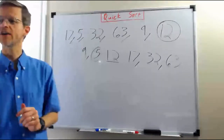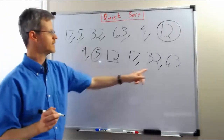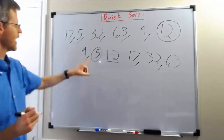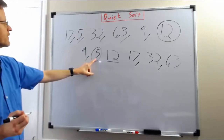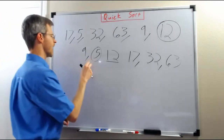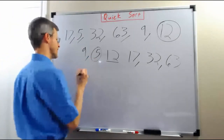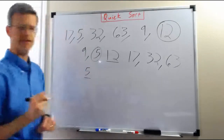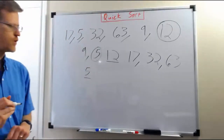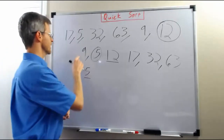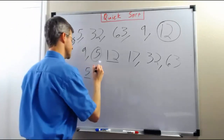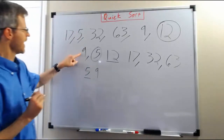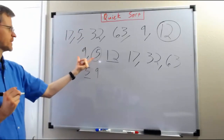Quicksort recurs on the lists that are formed on either side of the pivot. So we're going to pick 5 as our pivot element out of this list, write that down here and underline it, showing that it was the pivot before. Then we're going to write 9 to the right of it because it's greater than 5, and those were the only two numbers from that list.